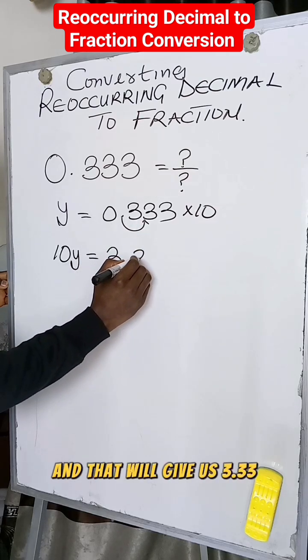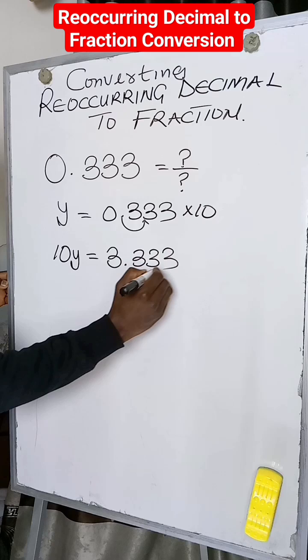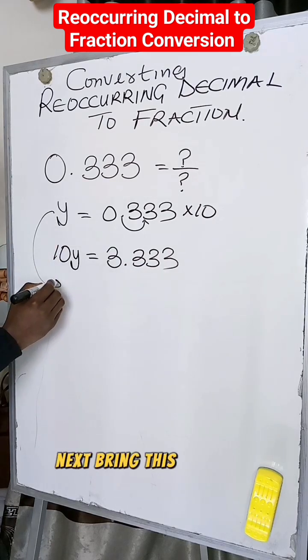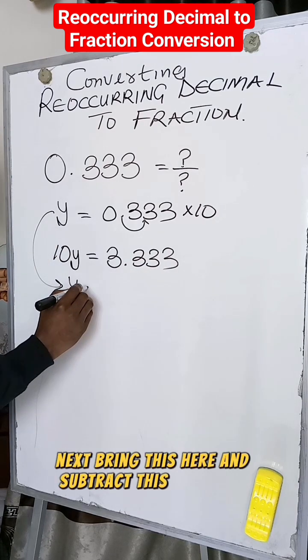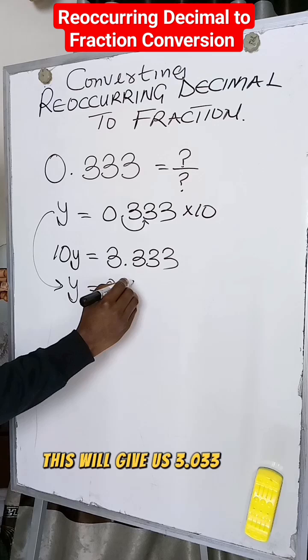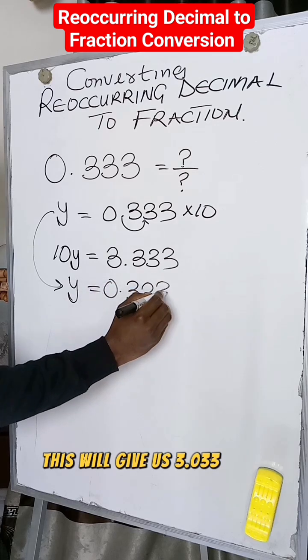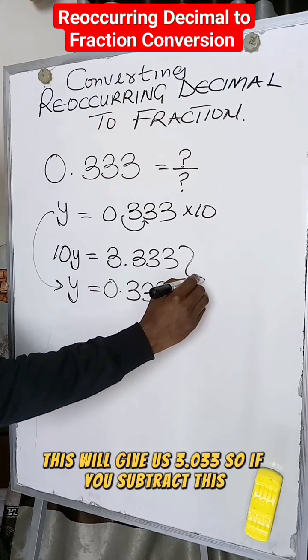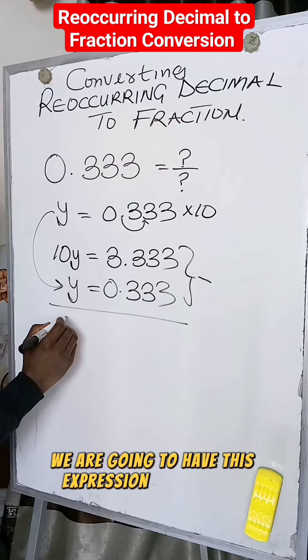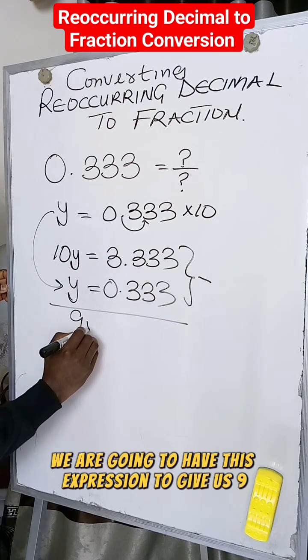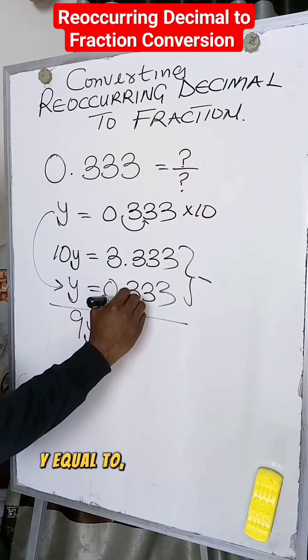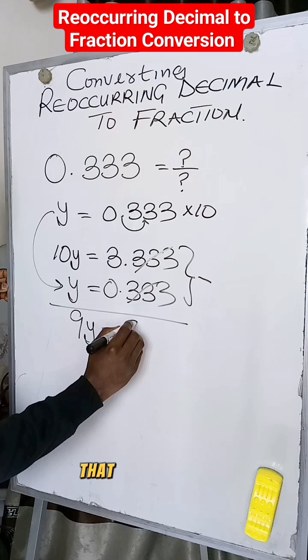Next, bring this here and subtract this from this. If you subtract this, we're going to have this expression give us 9y equal to 3.